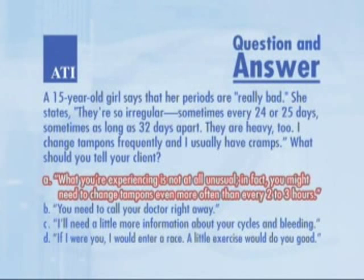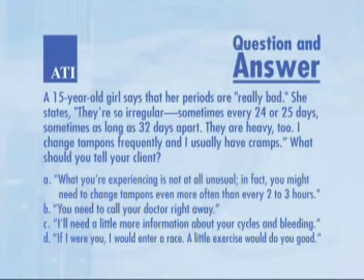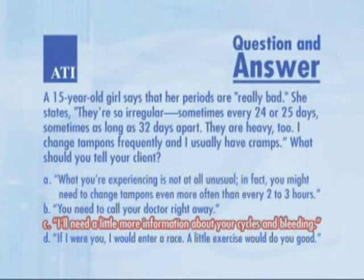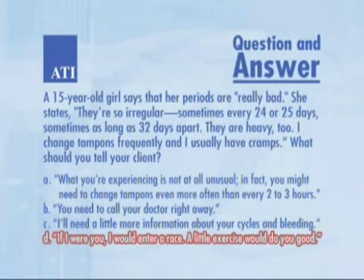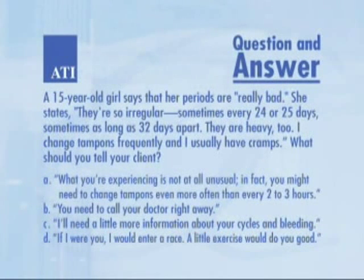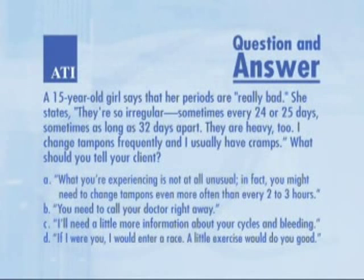The answer is A: what she's experiencing is within normal limits. It is common for teenagers to have irregular cycles. The cramps, too, are normal and usually indicate ovulatory cycles. Reassure her that it is unlikely that anything is wrong.